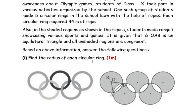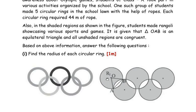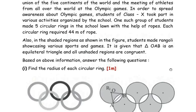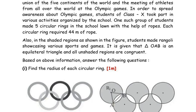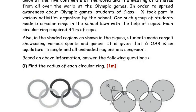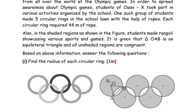Find the radius of each circular ring. All the circular rings are the same, so if we get the radius of one ring, it represents the radius of all rings. Each circular ring required 44 meters of rope — this means the circumference of the circle is 44, because to make this ring they have used 44 meters of rope.